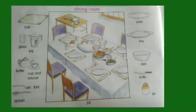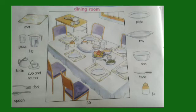Next is dining room. What can you see here? You can see table, chairs, and some food kept on the table. We have our meals in the dining room. And what are the utensils you can see? There are plates, tray, dish, knife, cup and saucer, kettle, glass, and jug. Do you have these things in your dining room?